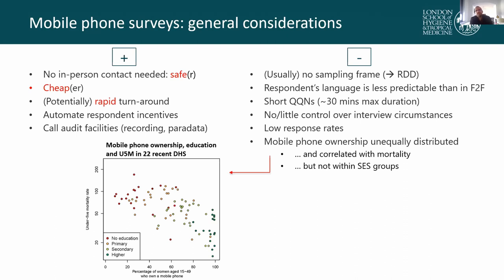Face-to-face surveys very often exceed one hour in average duration. In the context of a mobile phone survey, we need to try and keep the duration much shorter to ensure respondent engagement and reduce refusals and dropouts. That requires us to work with very short or shortened questionnaires compared to what we are typically used to.